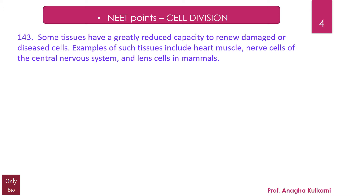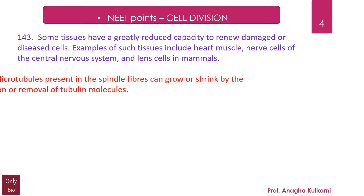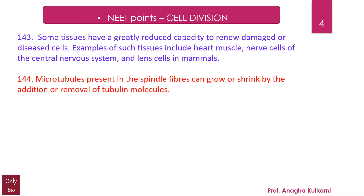Point number 143: Some tissues have a greatly reduced capacity to renew or repair damaged cells. Examples of such tissues include heart muscle, nerve cells of the central nervous system, and the lens cells in mammals.